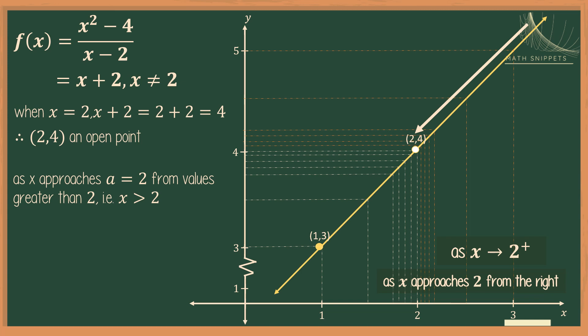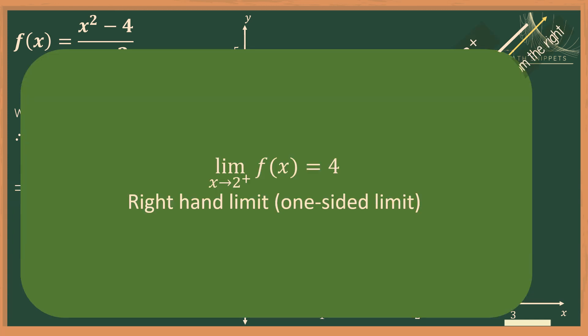What happens to the points of the graph when this happens? The points of the graph are getting closer and closer to 0.24. So, the values of the function approach 4. In limit notation, we get this form. We read it as the limit of f of x as x approaches 2 from the right is equal to 4. This is another one-sided limit, which we call the right-hand limit because we took values of x that are greater than 2.